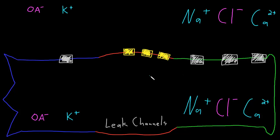Here I've drawn a blown up neuron. We'll have the soma in red, the axon in green, and one dendrite in blue. I've blown up the dendrite and the axon really large, just so I have some space to draw.